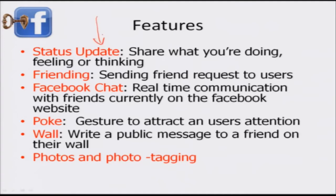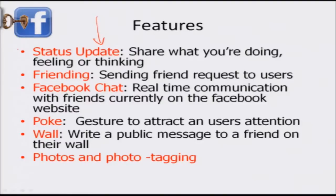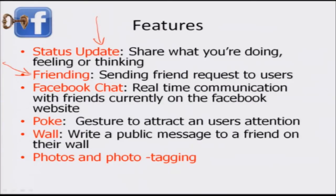Some quick features of Facebook. Number one is updating your status — share what you're doing, feeling, or thinking: 'at college,' 'don't disturb,' 'at home on a lazy Sunday,' 'waiting for friends.' Automatically you will get more people interacting with you. You can also do what's called friending — you send friend requests to users you know. For example, you know Deepak, and Deepak knows Murali, so you send a friend request to Murali because he seems like-minded.